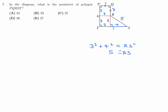Through Pythagoras, RS is equal to 5. So now the perimeter of this whole shape is 3 plus 3 plus 5 plus 7 plus 6, and that is equal to 24. So number 7, the answer is A.